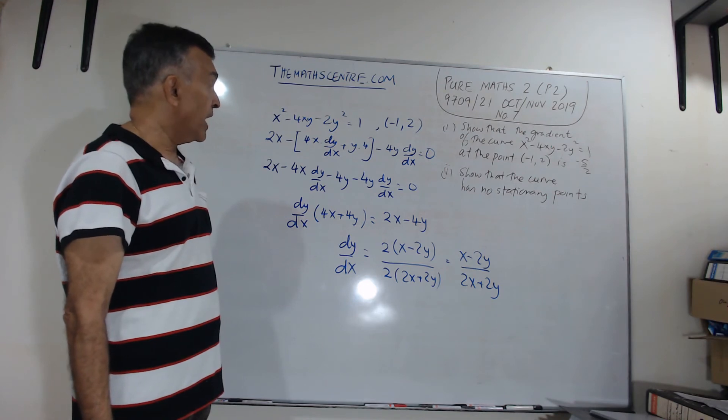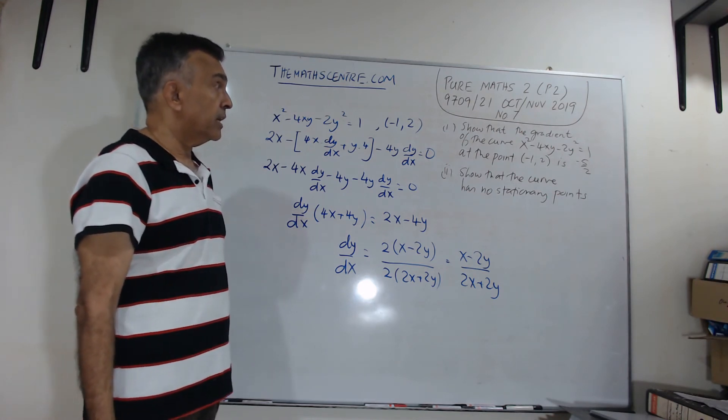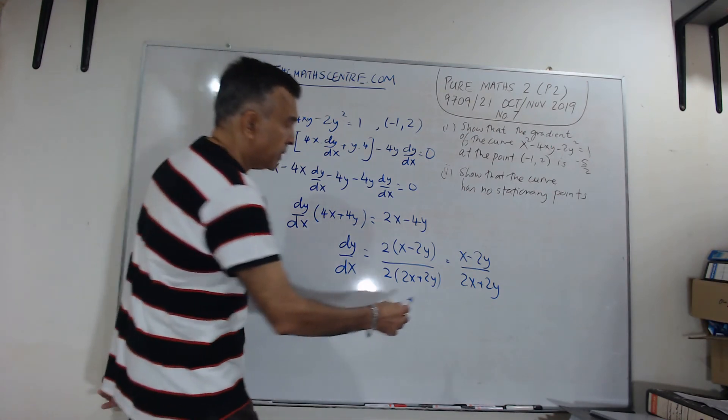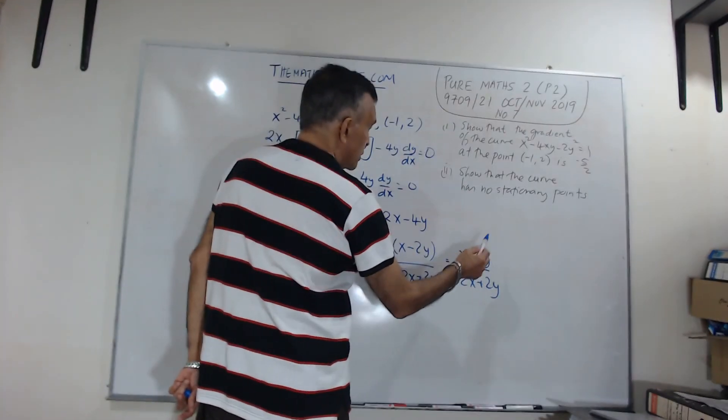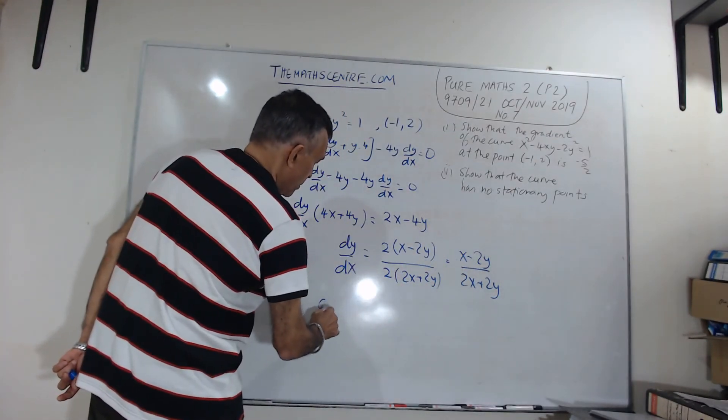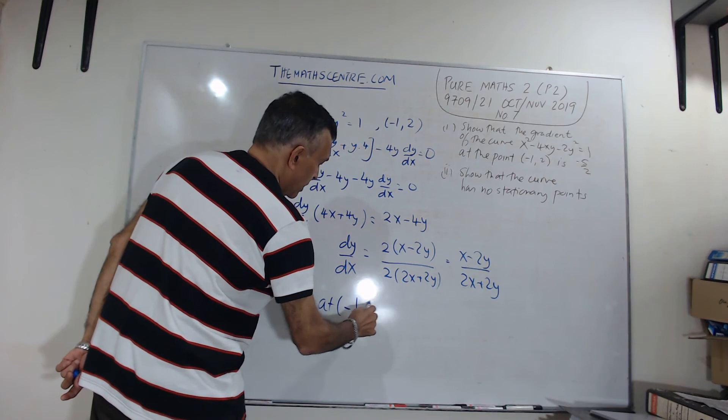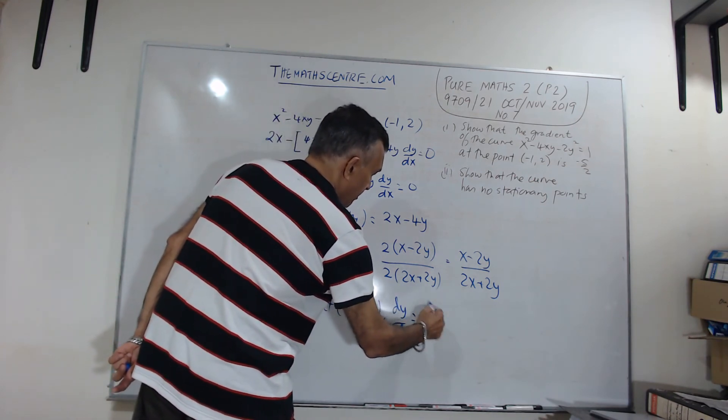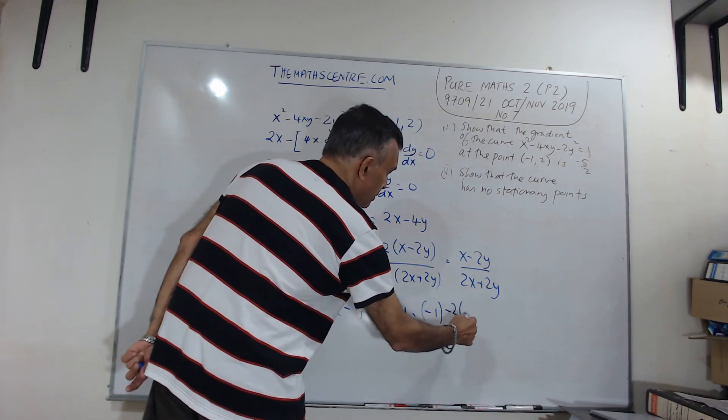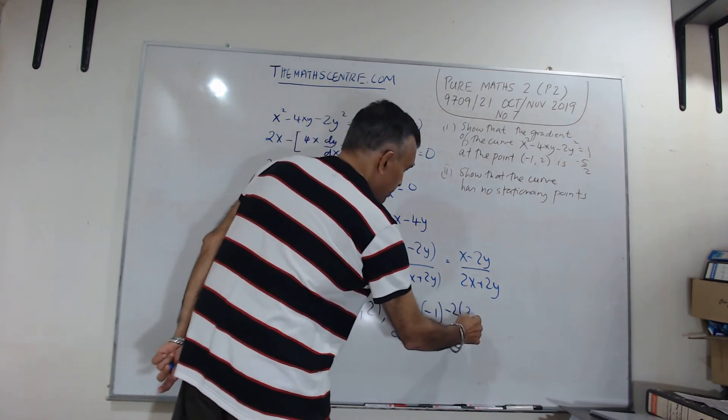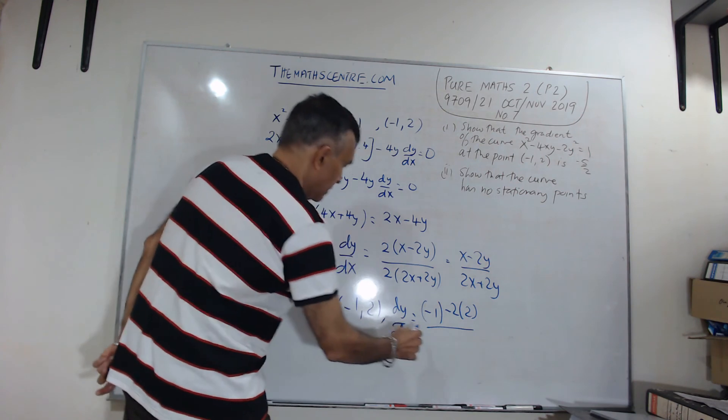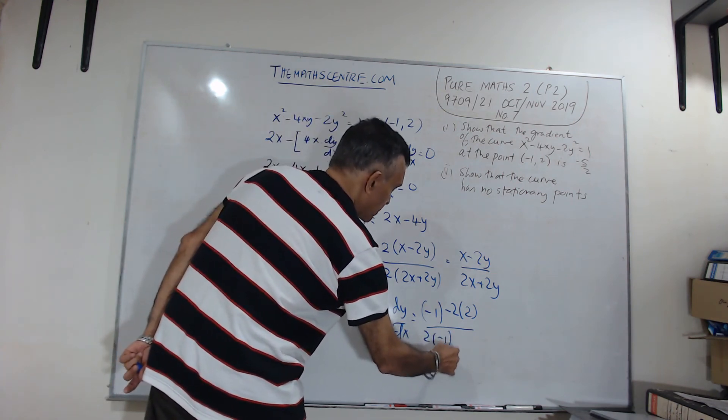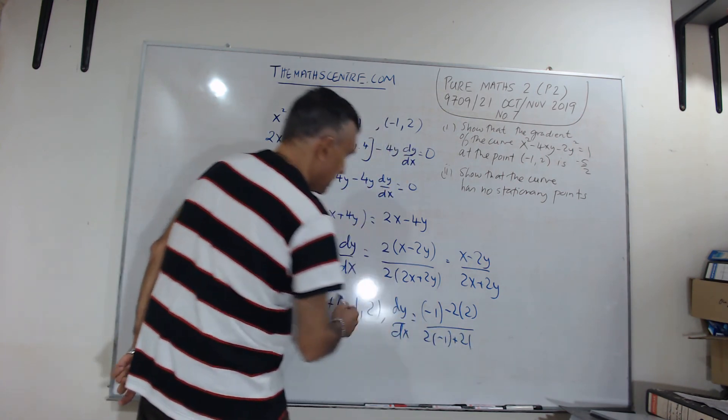But, I need to find the value of the gradient at (-1, 2). So, let's plug that in. At (-1, 2), dy/dx equals -1 minus 2. The y value is 2 over 2 times -1 plus 2 times 2.